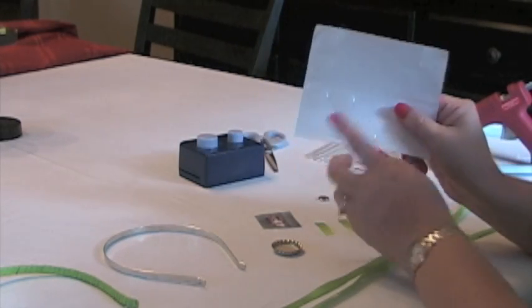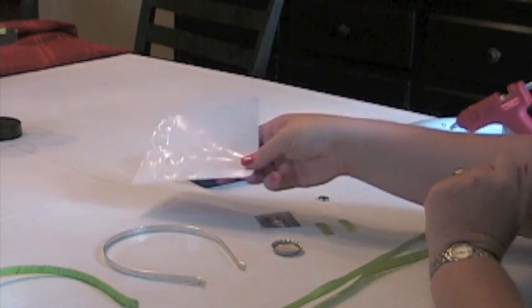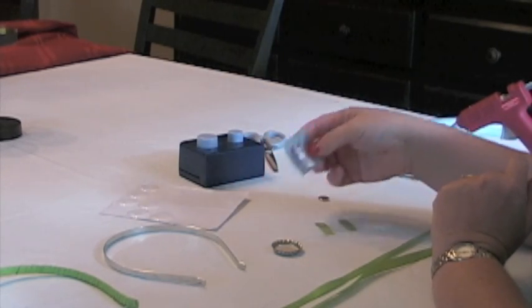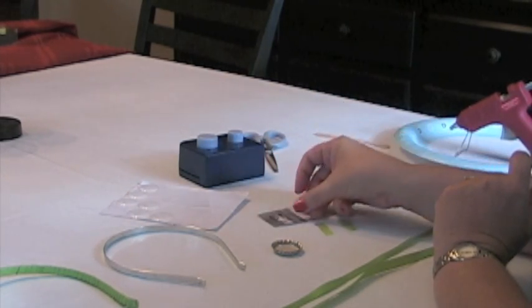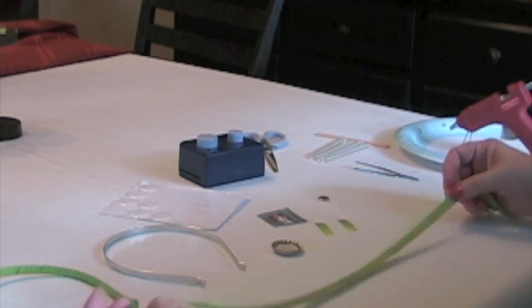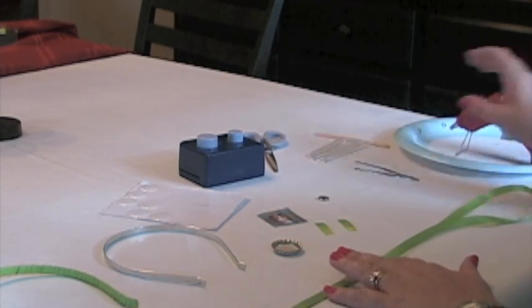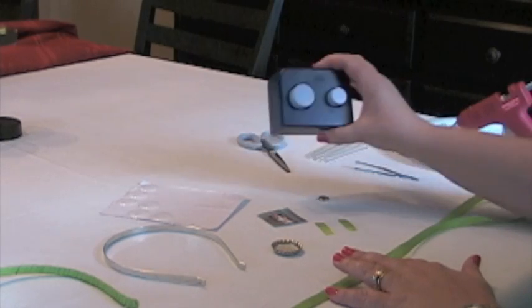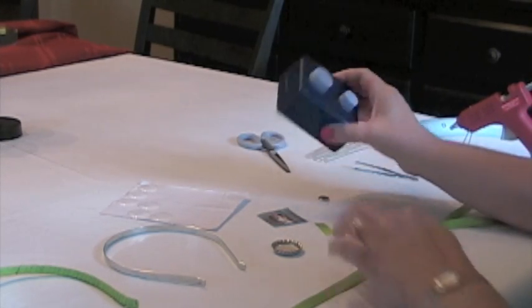These are epoxy glue dots. They give it a nice glossy finish. You'll need a picture and some ribbon to cover your headband along with some hot glue, scissors, and a one-inch punch for your picture.